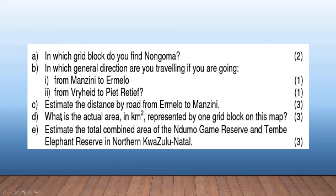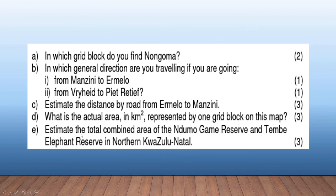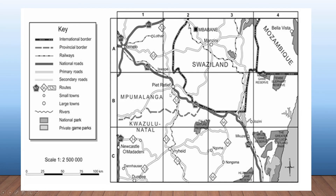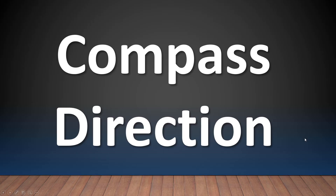Those are the kinds of questions. You can also be asked to estimate the distance, or what is the actual area in kilometers squared represented by one grid — which you'll work out according to the scale. Or estimate the total combined area of the game reserve and the elephant reserve, where you'll look at the map to find exactly where everything is. These are just a few examples of the type of questions, and you can see the mark allocation. I hope this helps you understand compass direction.